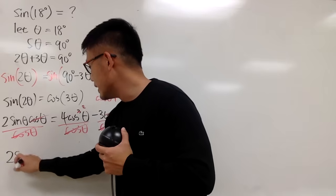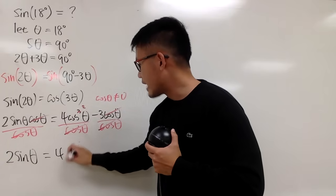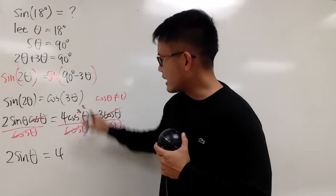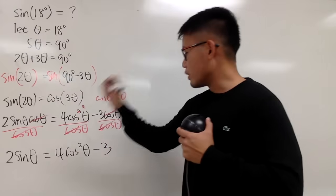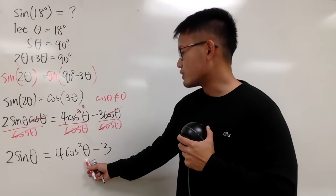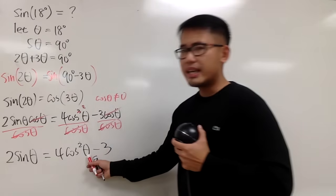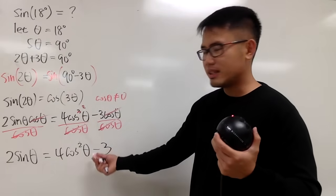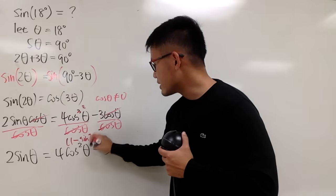Anyway, on the left-hand side, we have 2 sine theta, and this right here is just 4 times cosine squared, and then this is minus 3. Cosine squared, and we have the sine theta here. I can actually use an identity to replace this. We can look at this as 1 minus sine squared theta.